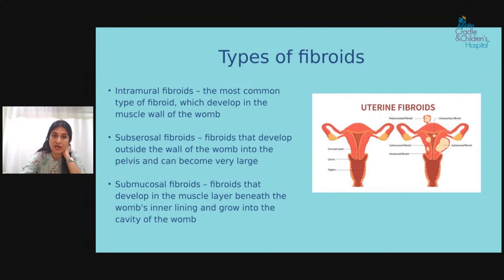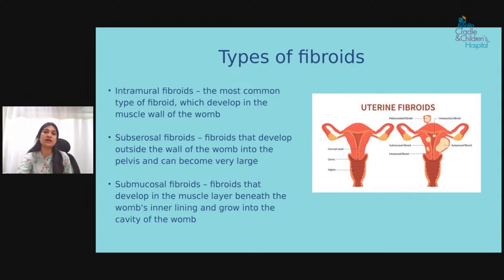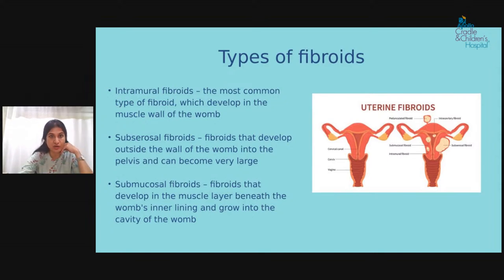The second type is subserosal fibroid, which comes from the outer layer of the uterus called the uterine serosa and develops outside. Sometimes they become pedunculated. Subserosal fibroids usually don't cause many symptoms, but they tend to grow very large compared to other types.